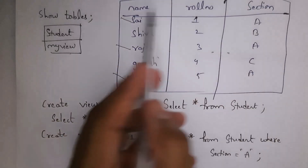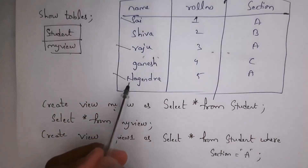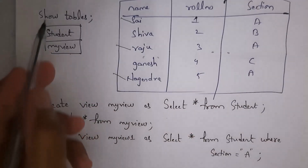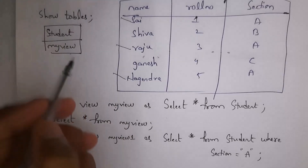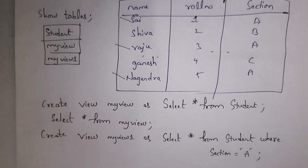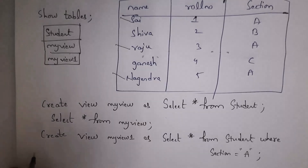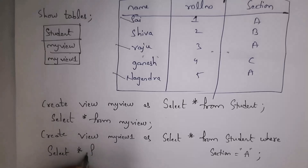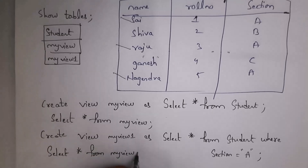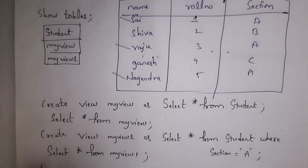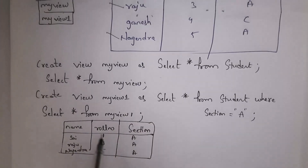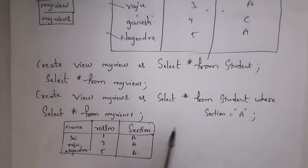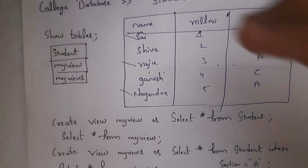'my_view_1' contains only data of students whose section is A: Sai, Raju, and Nagendra. When you write SHOW TABLES it will display three tables: student, my_view, and my_view_1. To see data in 'my_view_1', write: SELECT * FROM my_view_1 and add a semicolon. The output will display all columns of students whose section is A.